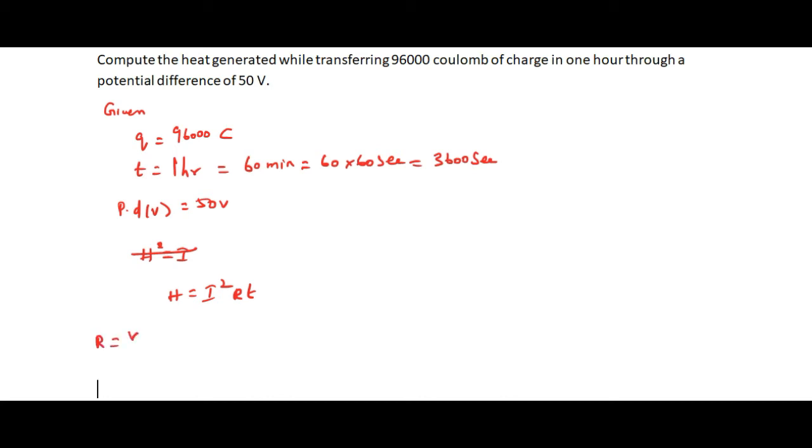Substituting into the above equation, H equals I squared times V by I times t. If I cancel one I, then H equals V times I times t, which is voltage times current times time.